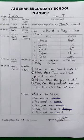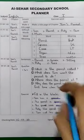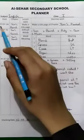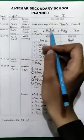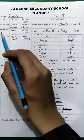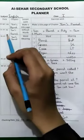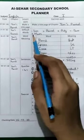Ok students, ab aapke WhatsApp group ke upar aapka planner aa chuka hoga. Jis ko dekhte huye aapne pure hafte ka kaam karna hai. 17th of July: make a title page on your copy. 17th of July again: write difficult words on your copy.